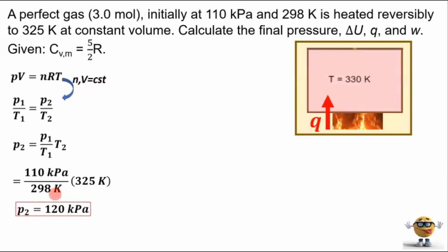And when we plug in those numbers, solve for the final pressure, that gives us 120 kilopascals. All right, first one's done. To get this change in internal energy, we need to use the definition of heat capacity.